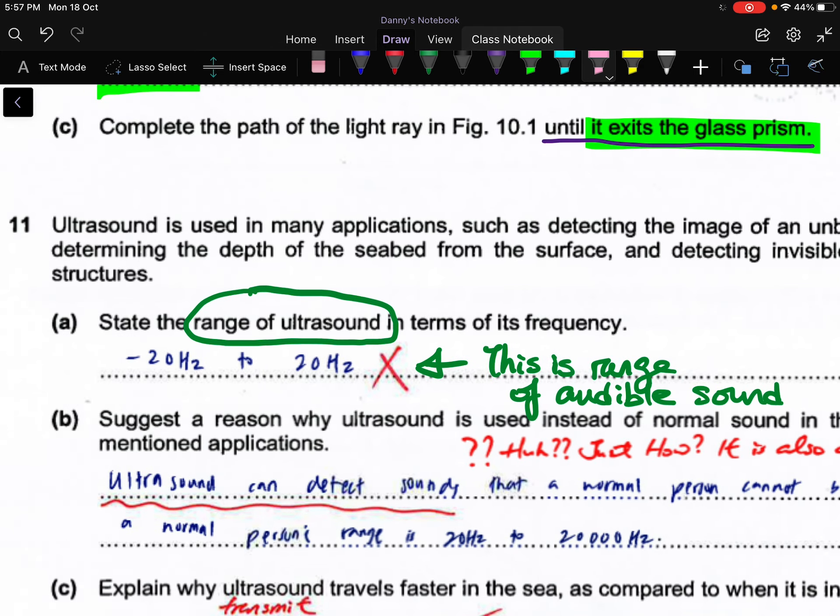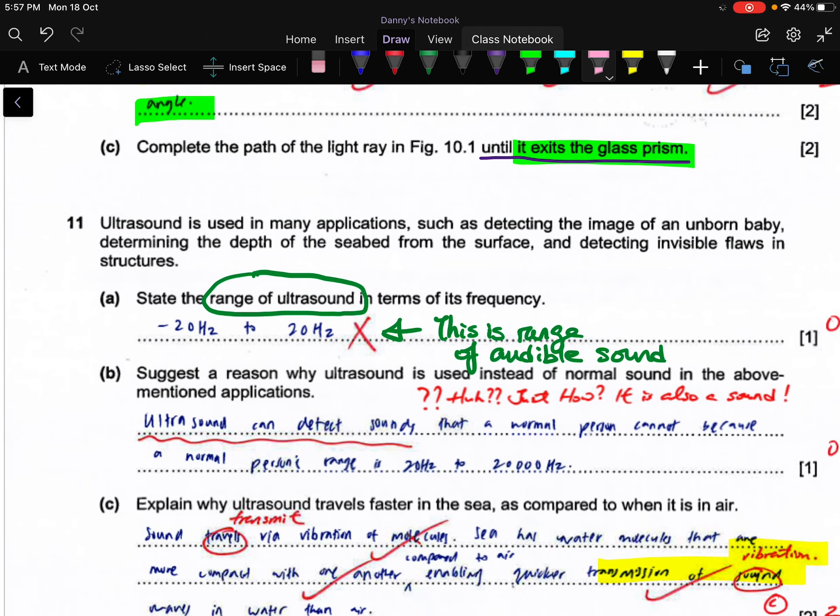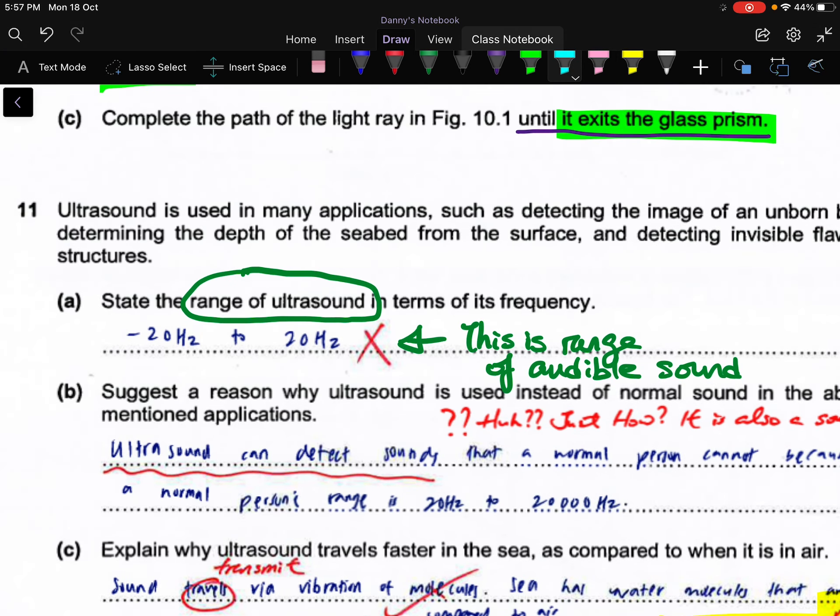For question 11, it is about sound and we are checking on your basic content. This is the range of ultrasound, and the candidate actually gave me the audible frequency. Unfortunately, you can see that she didn't really memorize it - it is in your homework. What happened is that your audible frequency, that means the frequency that you can hear, is between 20 to 20,000 hertz.